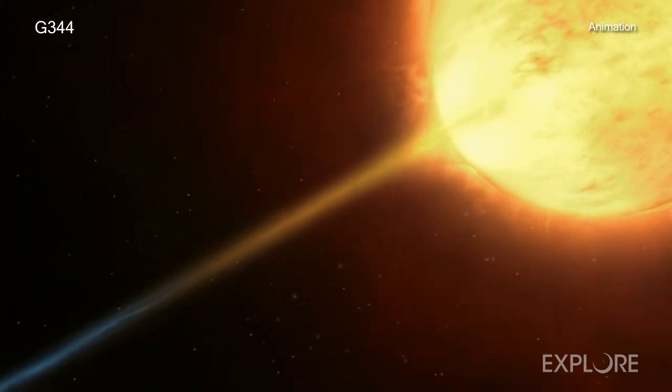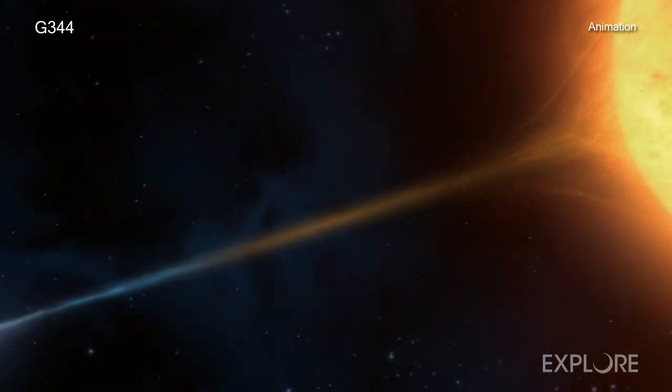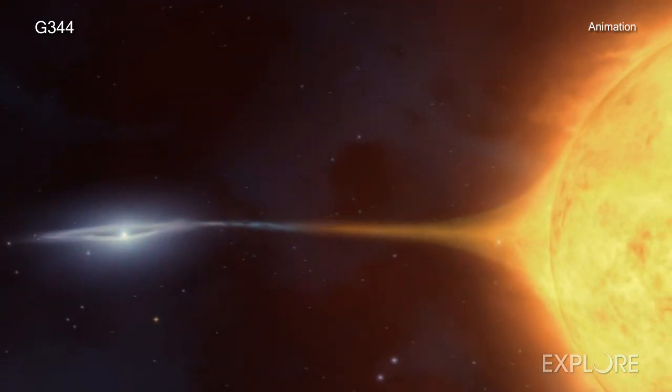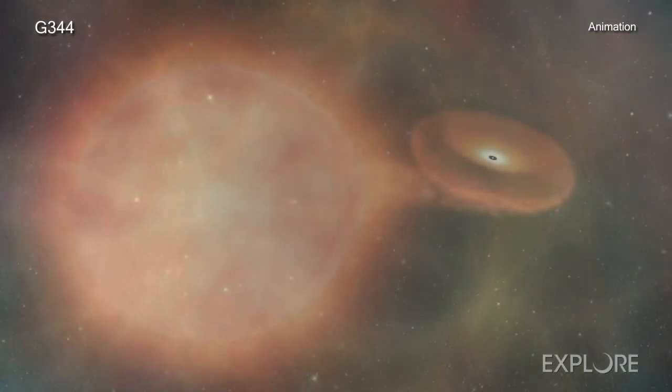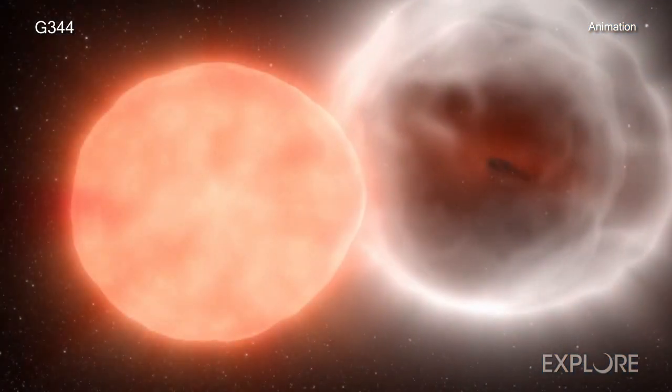If the companion's orbit brings it too close, the white dwarf can pull material from it until the white dwarf grows so much that it becomes unstable and explodes. This kind of stellar blast is called a Type Ia supernova.